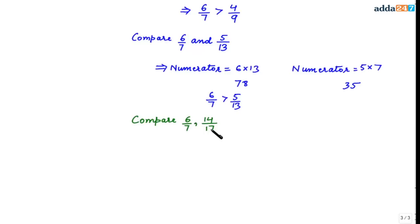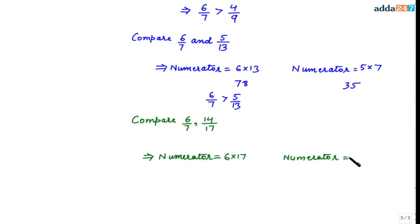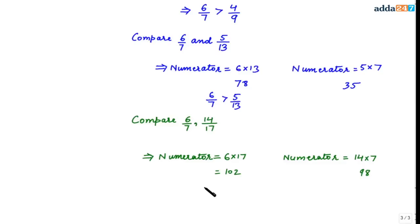Let's compare 6/7 and 14/17. Making the denominators the same: the numerator for 6/7 becomes 6 × 17 = 102, and the numerator for 14/17 becomes 14 × 7 = 98. Since 102 is greater than 98, we can see that 6/7 is greater than 14/17.